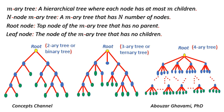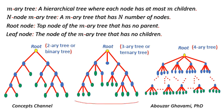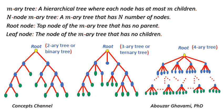As an example, the left side tree is a 2-ary tree, also called a binary tree. In a binary tree, each node has at most two children. The middle tree is a 3-ary tree, also called a ternary tree — each node has at most three children. The right side tree is a 4-ary tree, where each node has at most four children.